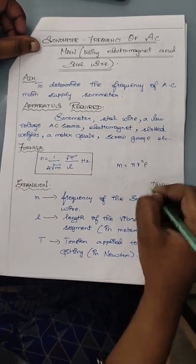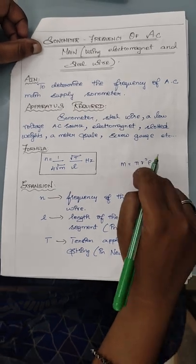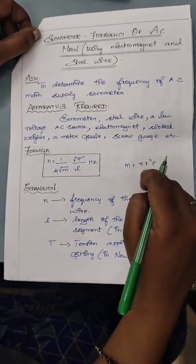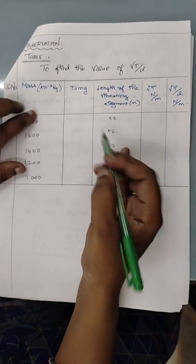ρ is going to be 7,815. From here we can calculate M value. R is going to be radius of the steel wire, so we'll find out from the calculation. First one is we need to find root T by L, for that the observation is going to be mass.